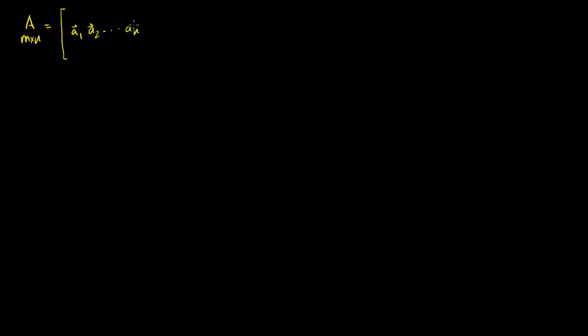Let's say I've got an m by n matrix A. That's my matrix right there. I could just write it as a series of n column vectors: A1, A2, all the way to An.